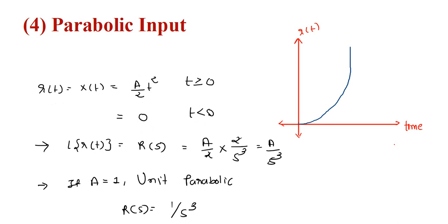In the frequency or s-domain, the Laplace of r(t) is given by R(s) equal to (a/2) multiplied by the Laplace of t squared which is 2/s³. The 2 cancels, giving a upon s cubed. If a is 1 then it is called the unit parabolic and is given by R(s) equal to 1 upon s cubed.